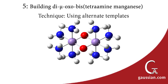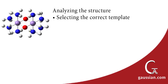In our final example, we will bring together all of the concepts introduced so far in this video by building the D2H and C2H isomers of dimuoxobis tetraamine manganese. This is our completed molecule. Before building, we'll take a moment to examine the molecule and plan our building process.